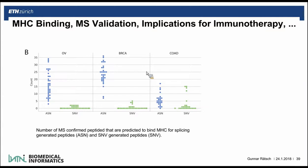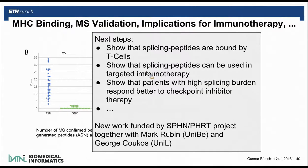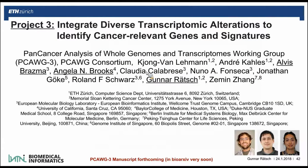This is pretty exciting. The next steps are to show that splicing peptides are actually bound by T cells, that they can be used to target immunotherapy, that gene expression is high enough to be detected, and that patients with high splicing burden may respond better to checkpoint inhibitor therapies. There is new work funded by SPHN and PHRT together with Mark Rubin and George Coukos to show whether these peptides are bound by T cells.